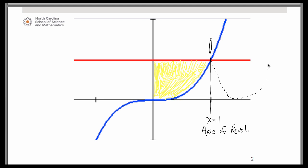So with the washer method, our representative rectangle similar to the disk method is perpendicular to the axis of revolution. So in this case, it's going to be going horizontally. So this is going to become a dy problem.